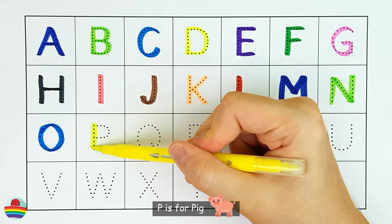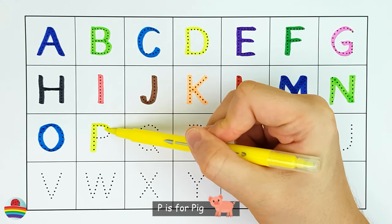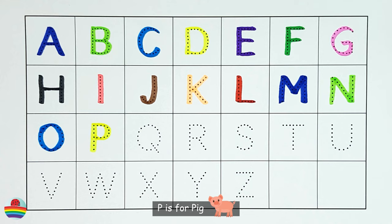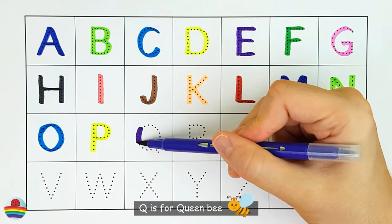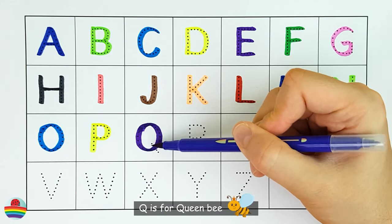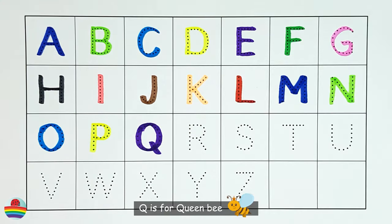P. P is for Quokka. P. Q. Q is for Queen Bee. Q.